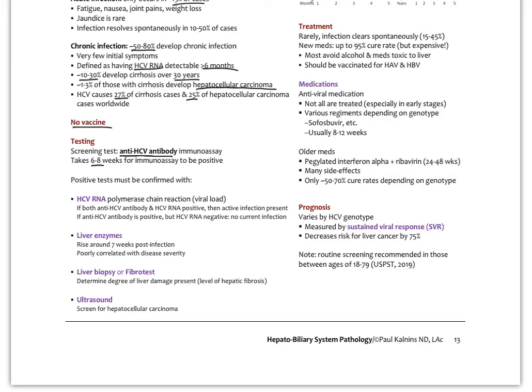Once we get positive results on that, we confirm it with a viral load test. That's the HCV RNA polymerase chain reaction test. If both the anti-HCV antibody and the HCV RNA are positive, then we have an active infection. If we have anti-HCV antibody but no HCV RNA, then there's no current infection. You probably have immunity to it, which you're lucky.